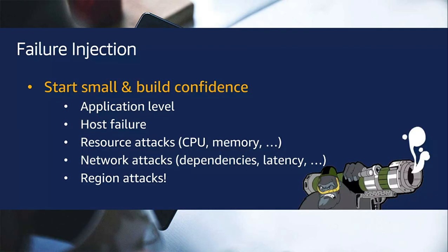In chaos engineering we inject failures to build confidence in the system so that even if something fails, the whole application will not crash. We can inject failures at the application layer — including fault injection, resource attacks, CPU and memory pressure. We can also inject issues at the network layer.